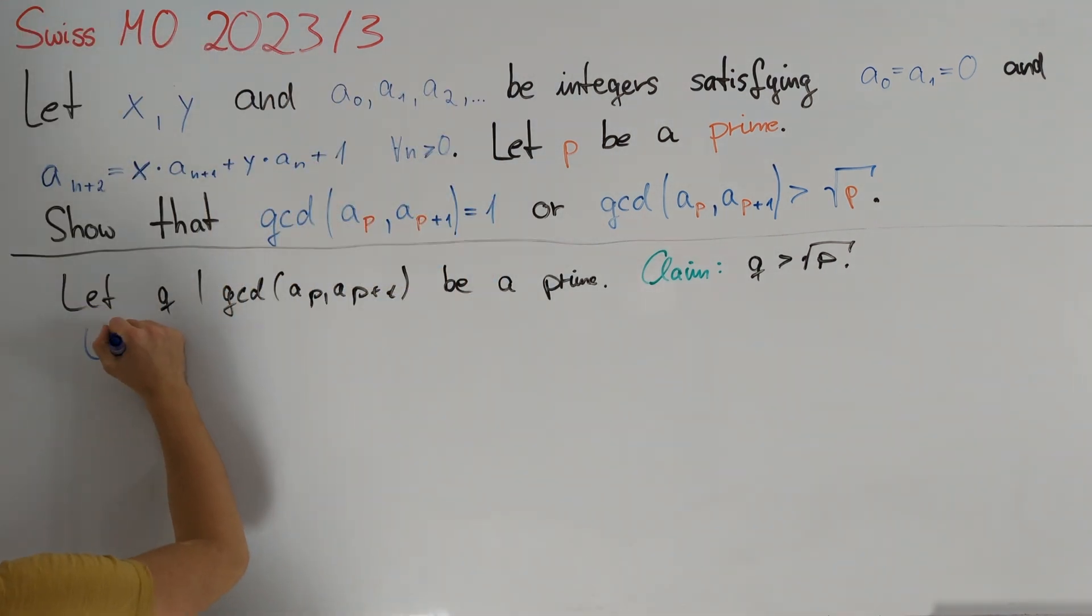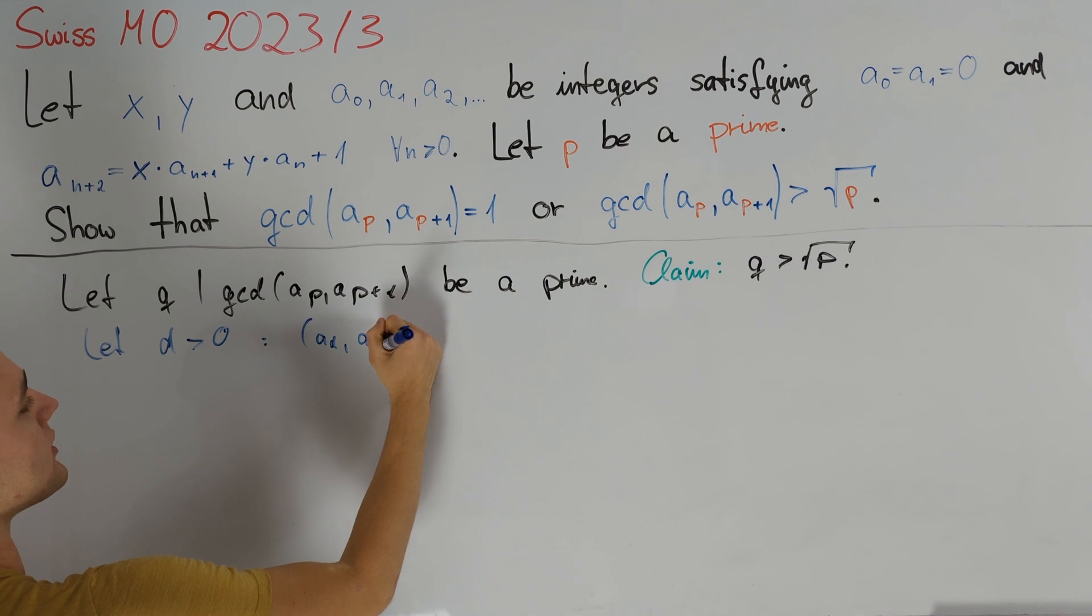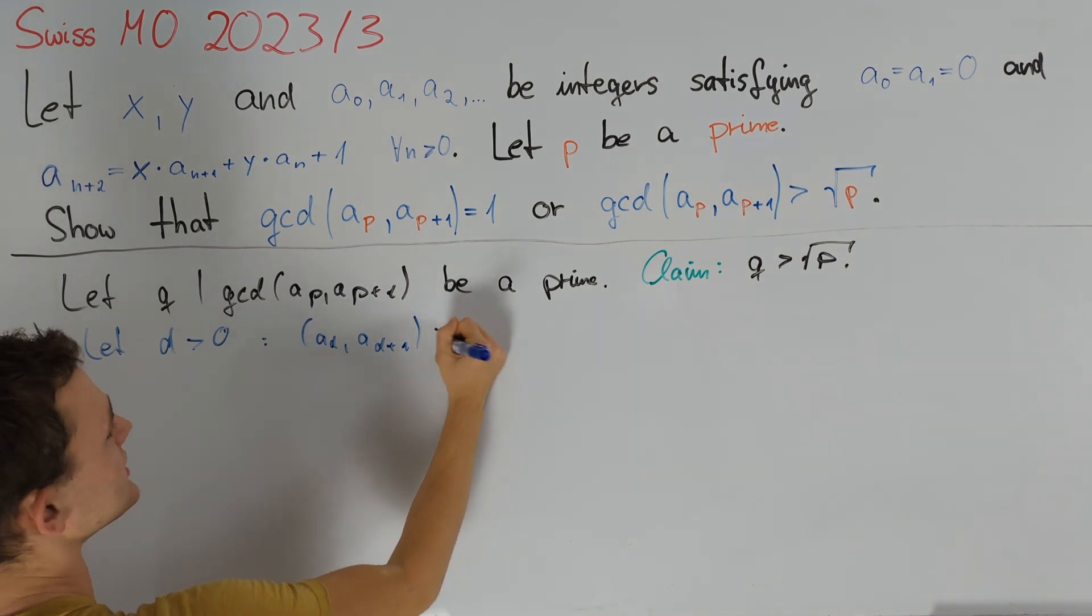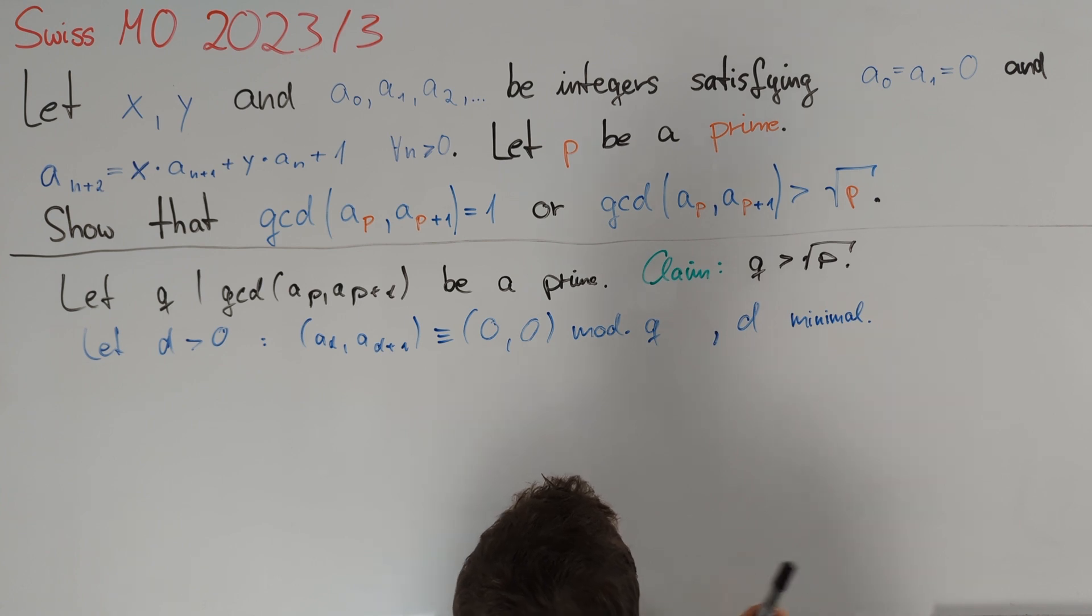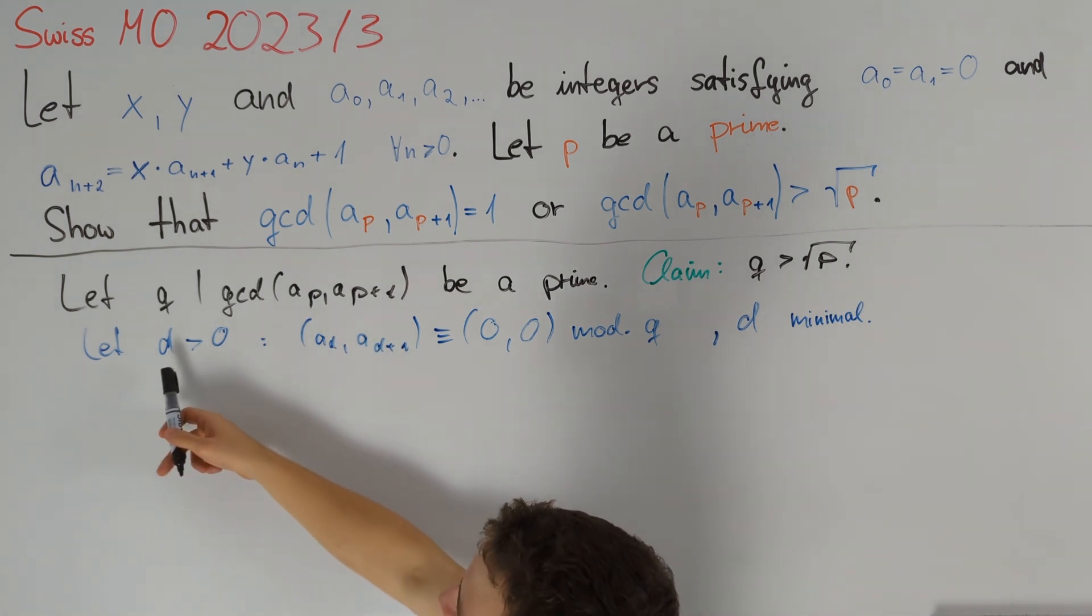So let us start with considering the minimal positive integer d such that (ad, ad₊₁) is congruent to (0,0) modulo q. Note that the existence of such a d is not trivial but we know that q divides aₚ and aₚ₊₁ which implies that d exists and that it is at most equal to p.